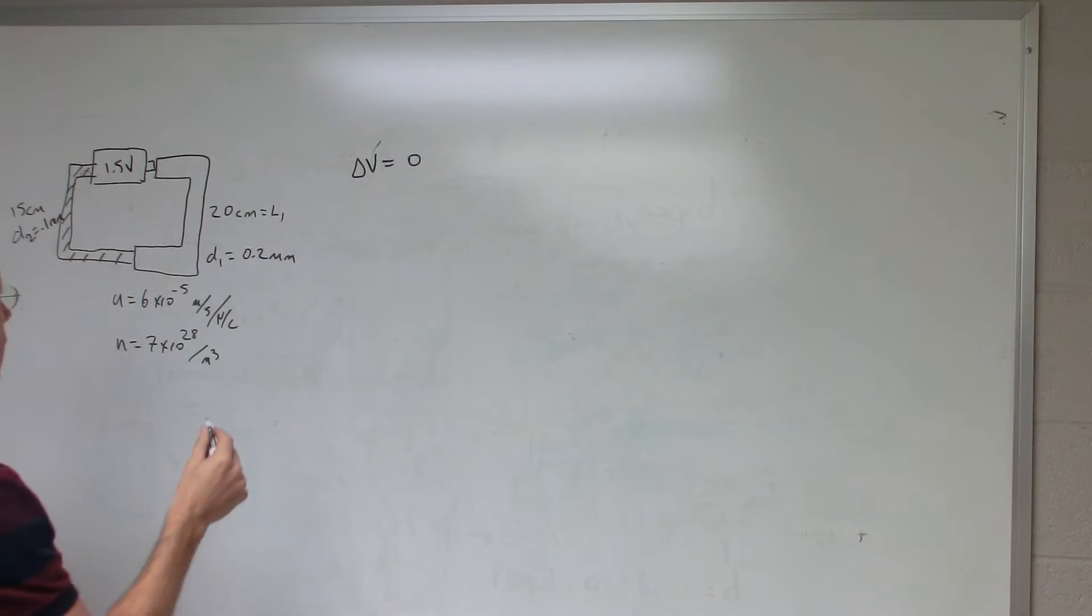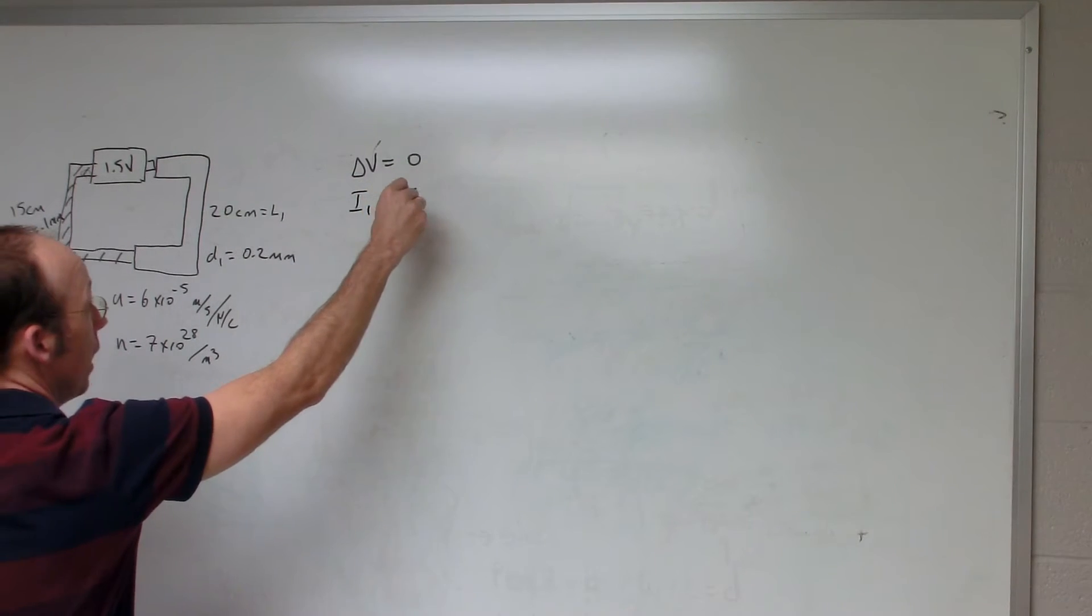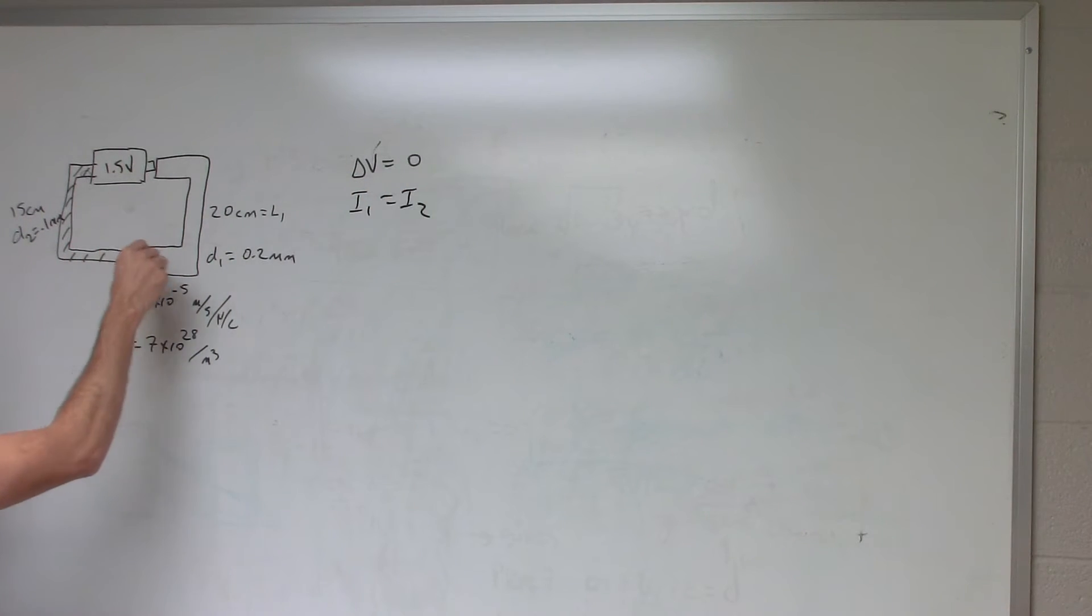And the other thing that is true is that I1 equals I2, because here I have some current in this region right here. We'll call that I1, and then here's I2, and they have to be the same. In the steady state, we have to have the currents are the same, otherwise I get charge buildup.